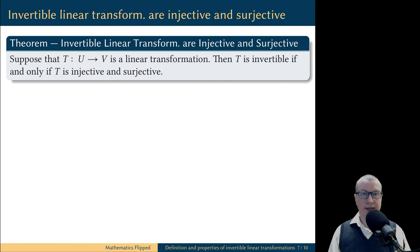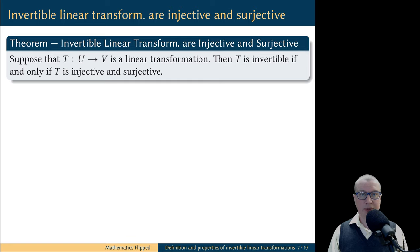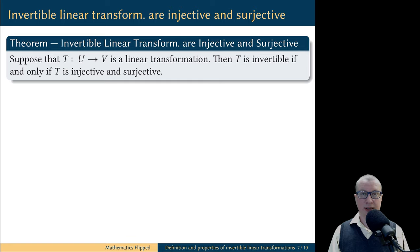Now it is natural to ask: given a linear transformation, how do we determine if it is invertible? Also, if it is invertible, how do we find the inverse linear transformation? For example, in the example we worked out earlier, how did I know what function s to take to satisfy the inverse property? We will figure out how to compute the inverse of an invertible linear transformation in one of the later videos. But in this video, we will answer the question: what linear transformations are invertible?